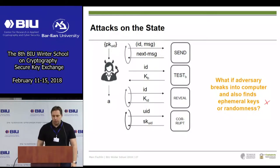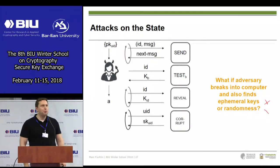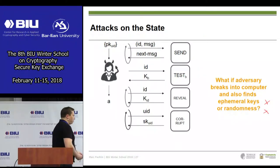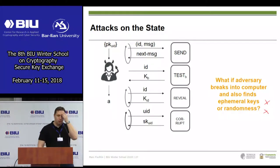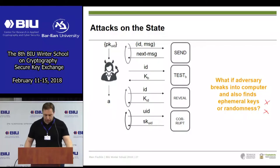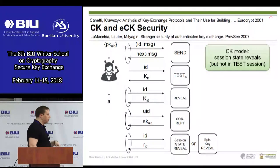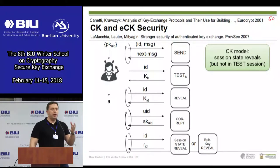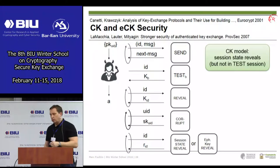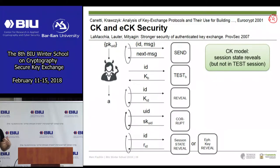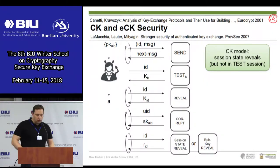The final slides of this part are about advanced models, and especially attacks on the state of the parties. I work in the weak corruption model: I can corrupt a party and get the long-term secret key, but not the inner state or the randomness used. The question is whether we have models that capture these cases.